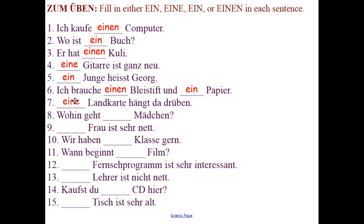Number 7: 'Eine Landkarte hängt da drüben' — A map hangs over there. Number 8: 'Wohin geht ein Mädchen?' — Where is a girl going? Number 9: 'Eine Frau ist sehr nett' — A woman is very nice. Number 10: 'Wir haben eine Klasse gern' — We like a class.